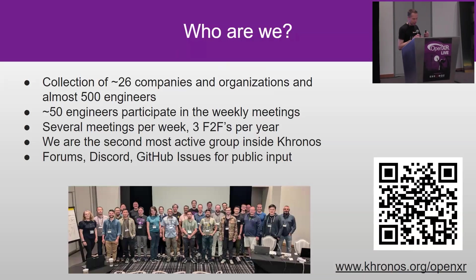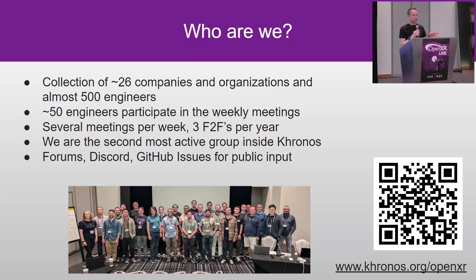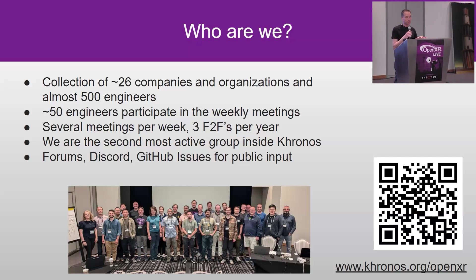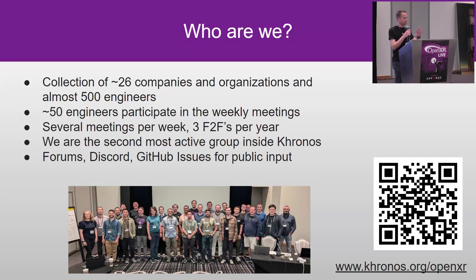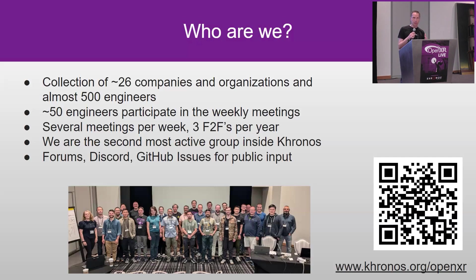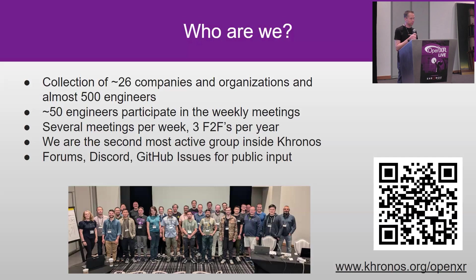The working group consists of about 26 companies, almost 500 engineers. When we meet, it's about 40 people that get together and we do several meetings a week, so it's a very active group. We are in fact the second largest group within Khronos. We have various forums, Discords, and GitHubs that can take input from the public — if you find a bug or an issue, there are ways to reach out to us. We do want your input; that's why we're here.